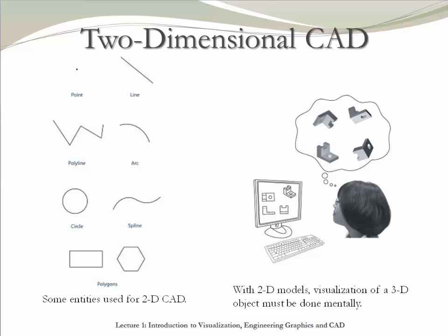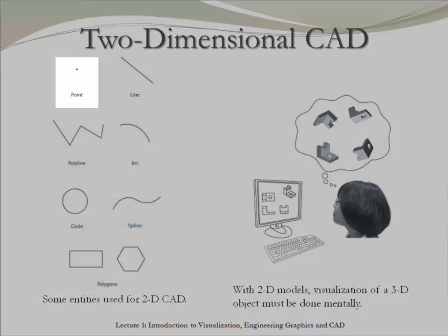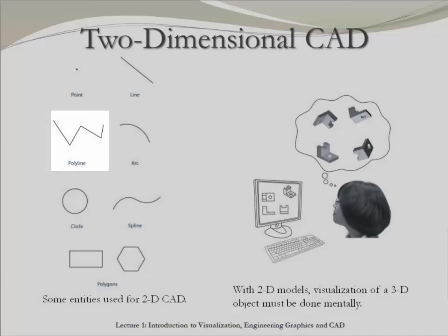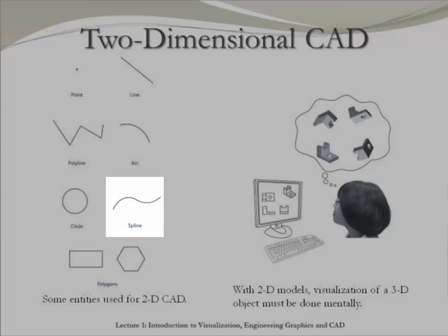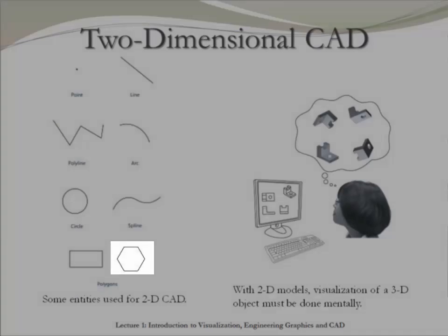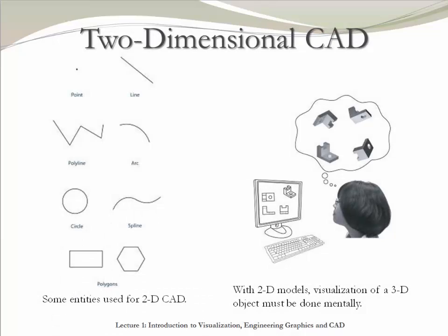In two-dimensional CAD, the main tools are point, line, polyline, arc, circle, spline, rectangle, and polygon. The idea is to use these tools to create 3D objects and for the user to be able to visualize them successfully.